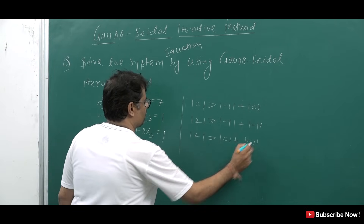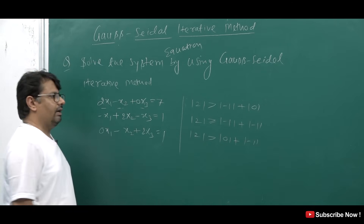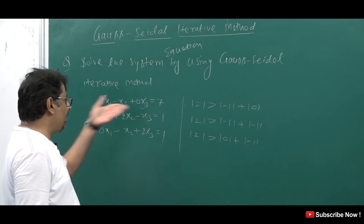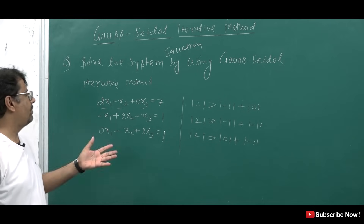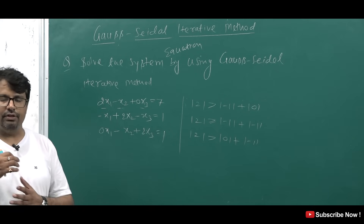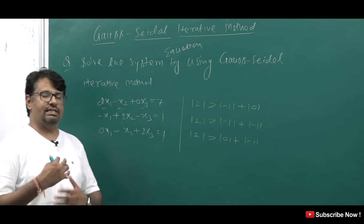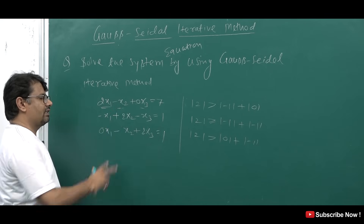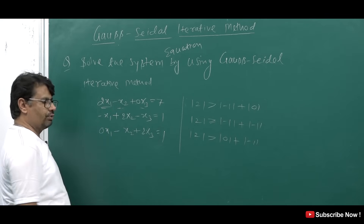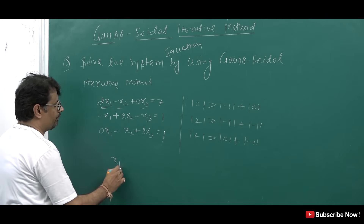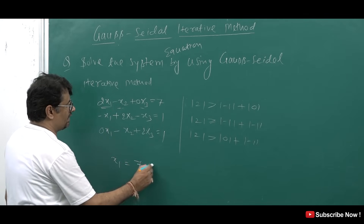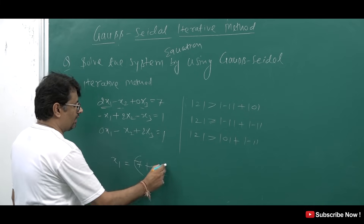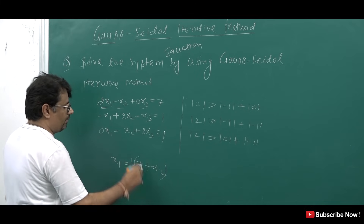If x1's coefficient is greater than the other two coefficients, we will keep x1 on one side and take the rest to the other side. So x1 equals (7 plus x2) divided by 2. Then we keep x2 on one side and take the rest, giving x2 equals (1 plus x1 plus x3) divided by 2.